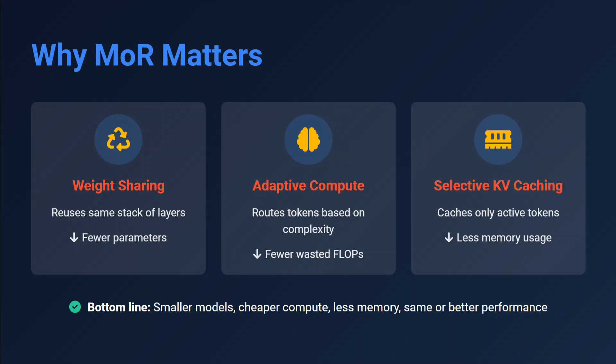Why does Mixture of Recursions matter? Weight sharing: using the same stack of layers means fewer parameters. Adaptive compute: for every token you decide how many recursions are required, resulting in fewer wasted FLOPs. Selective KV caching means less memory used. The bottom line: smaller models, cheaper compute, less memory, same or better performance.